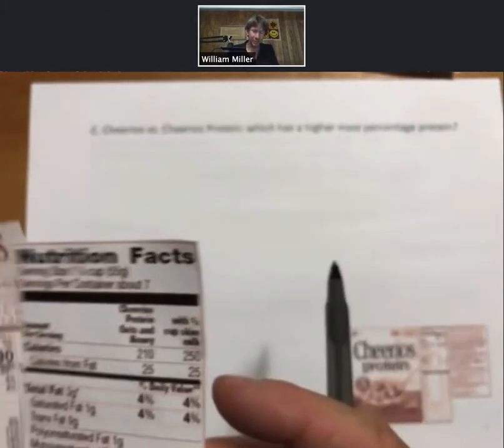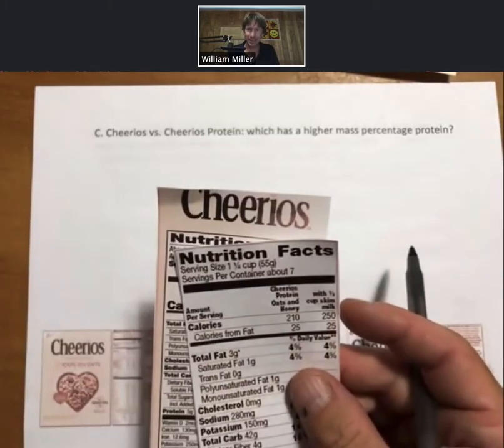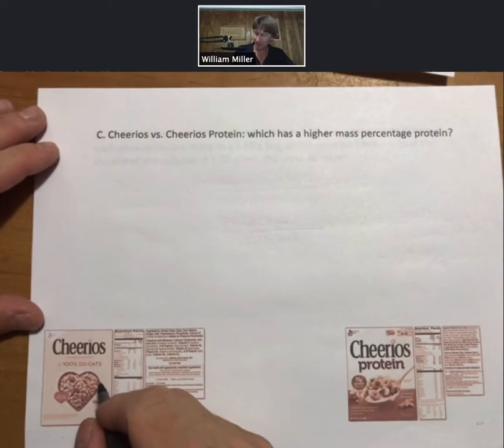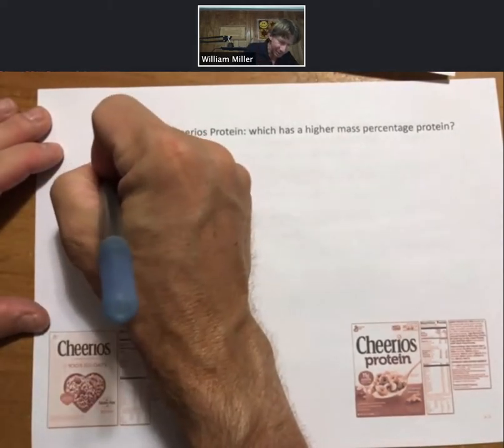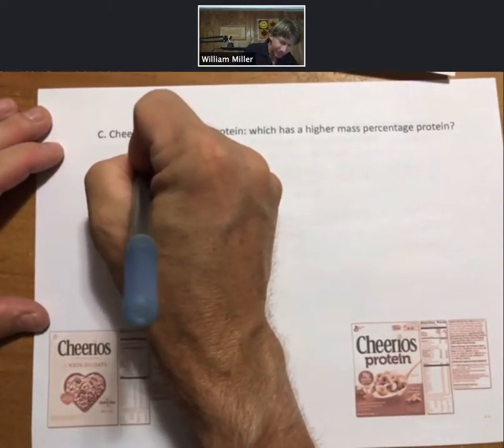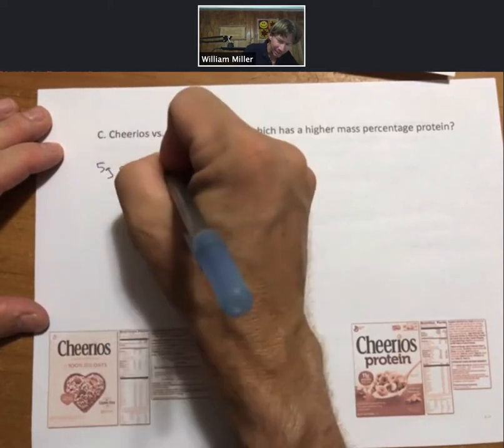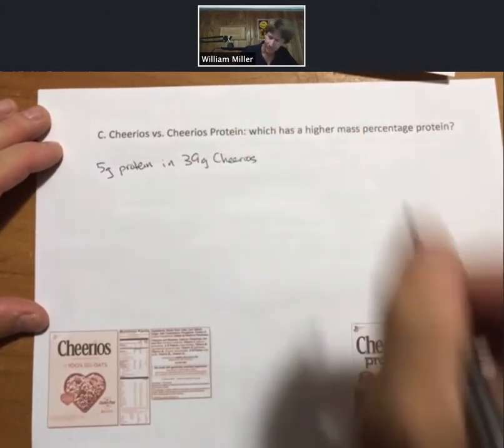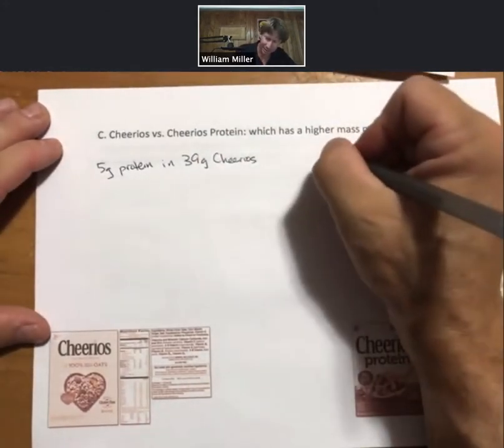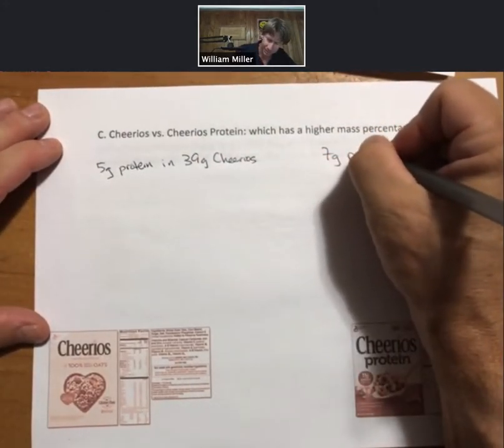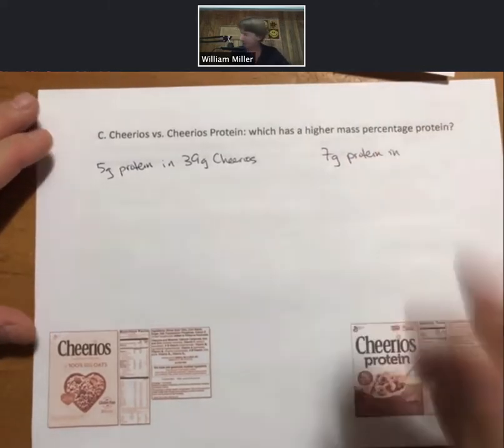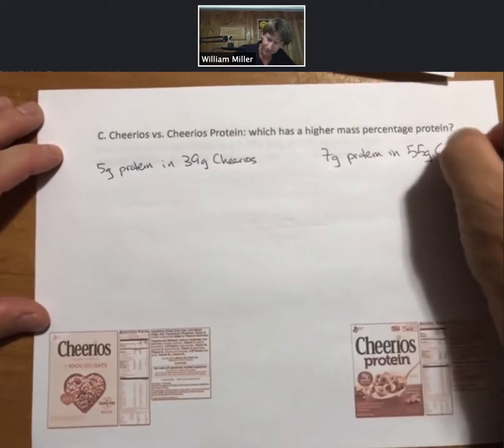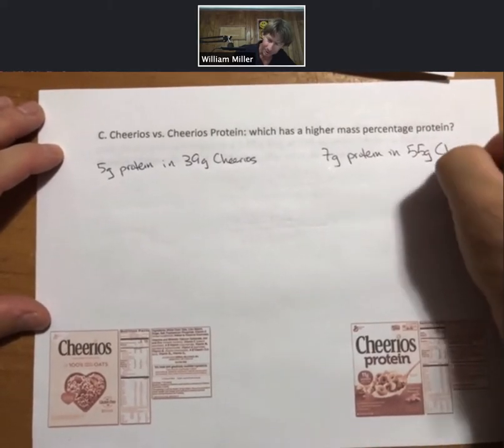One thing to note is not only is regular Cheerios five grams of protein, it is also a serving size of 39 grams. On the other hand, the serving size for the Protein Cheerios is 55 grams. So if we eat the same mass, let's see what happens.